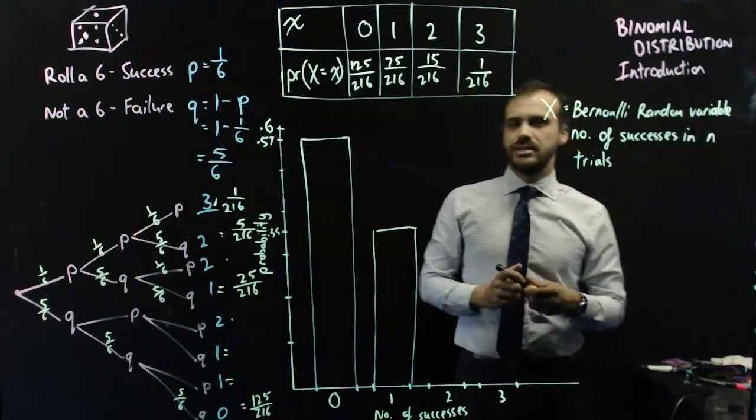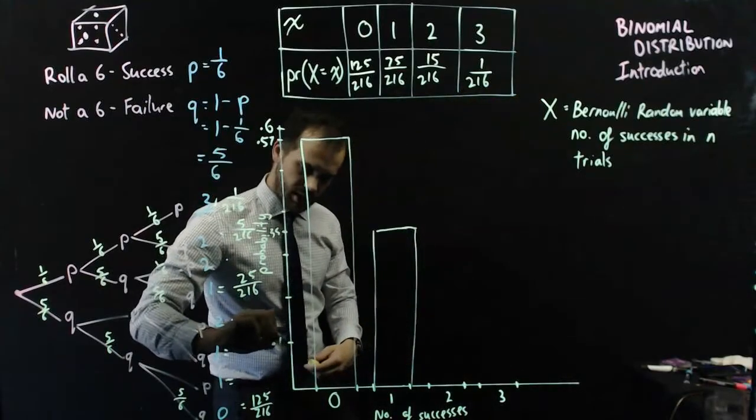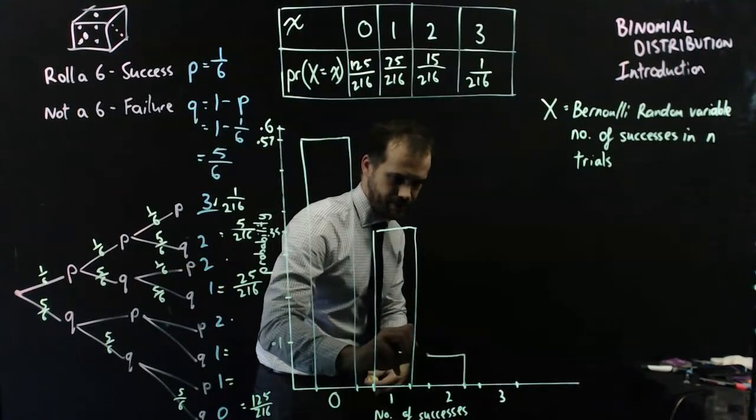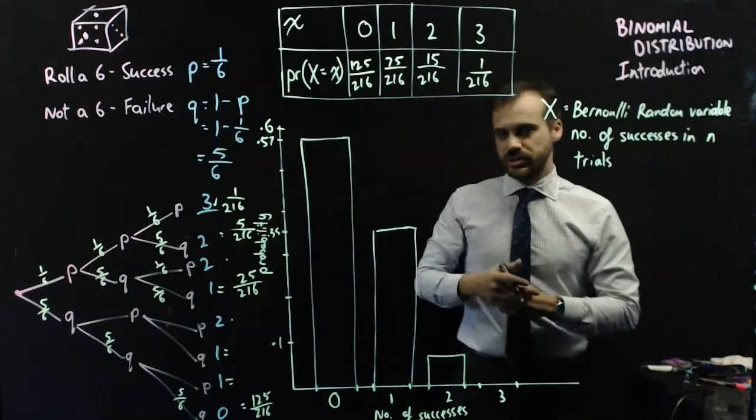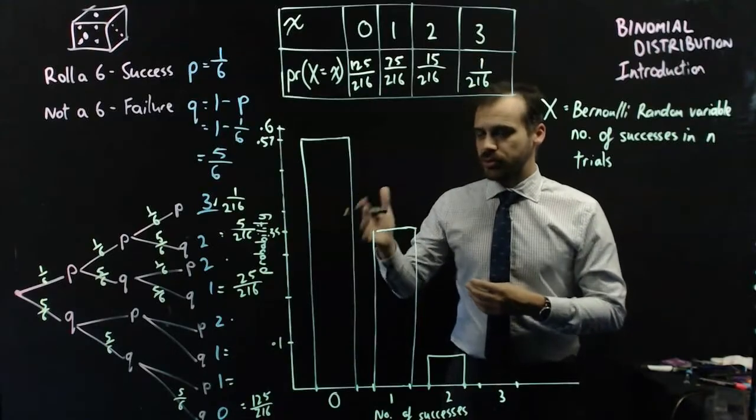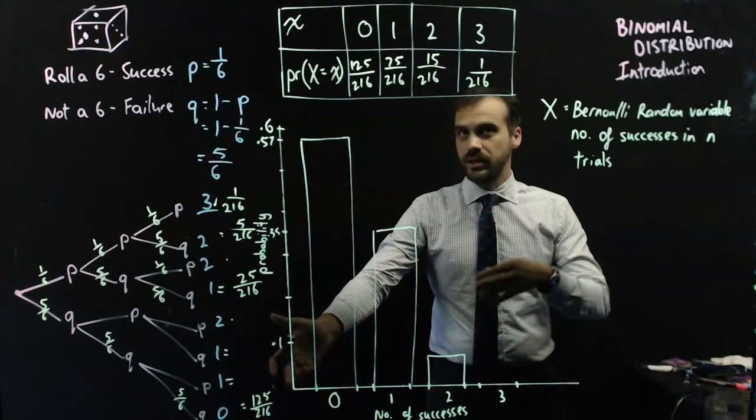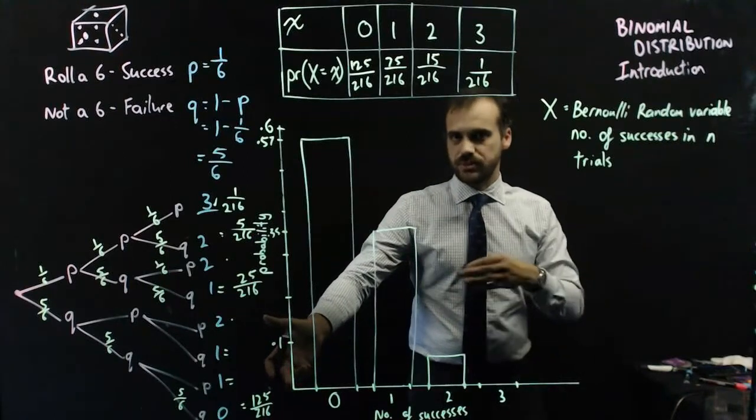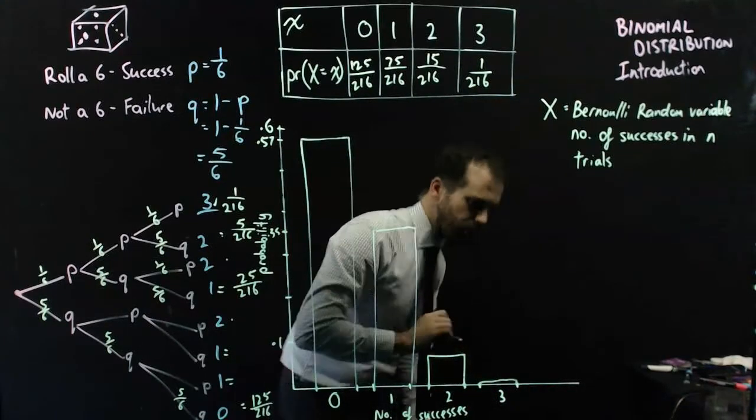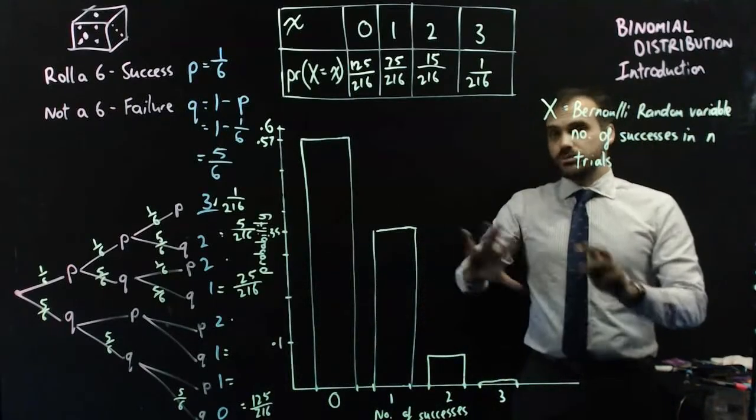15 in 216, that's an incredibly small number. It's about 0.7 something percent. That's 0.1 here, so that is going to be about there. And 1 in 216, that's approximately half a percent, 0.005. It's almost impossible to see. I'm just going to put it right down the bottom there. That is a binomial distribution.